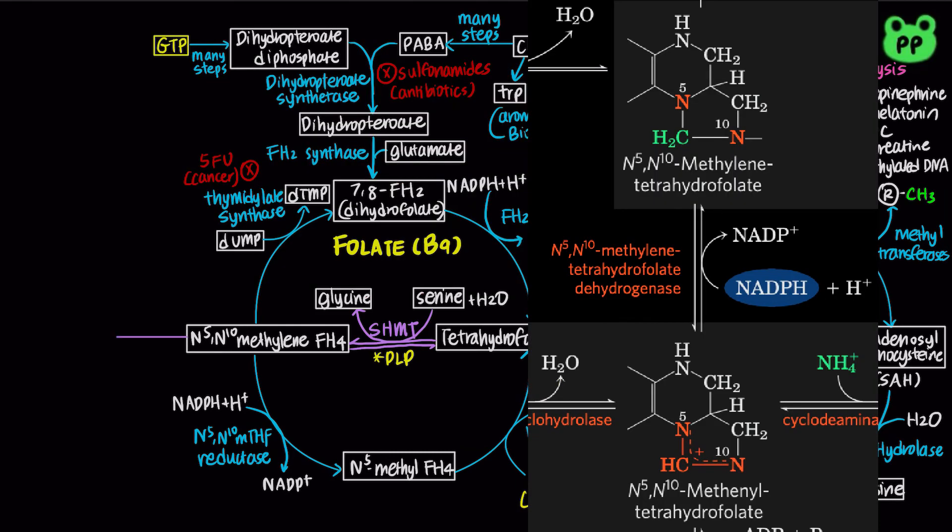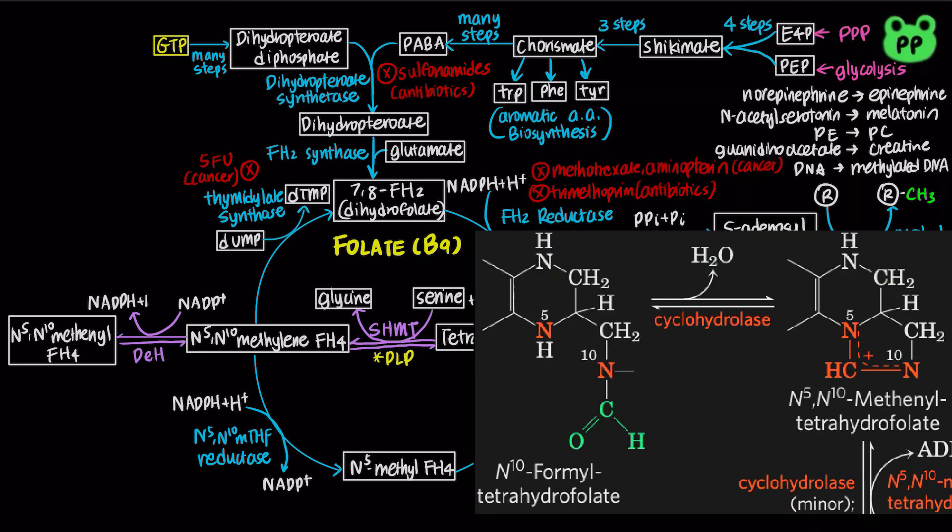N5,N10-methylene tetrahydrofolate can be further oxidized to N5,N10-methenyl tetrahydrofolate by the enzyme N5,N10-methylene tetrahydrofolate dehydrogenase, which is coupled to the reduction of NADP+ to NADPH. Cyclohydrolase can convert N5,N10-methenyl tetrahydrofolate to N10-formyl tetrahydrofolate, which serves as a precursor in purine biosynthesis.